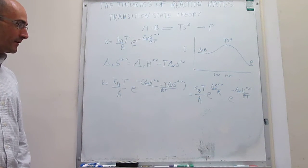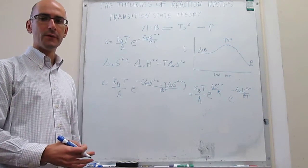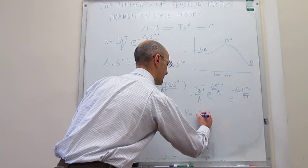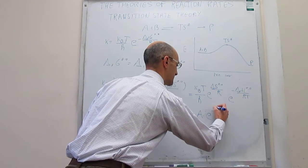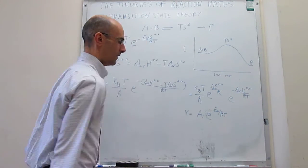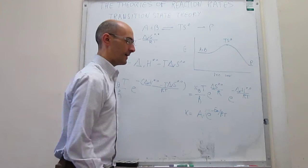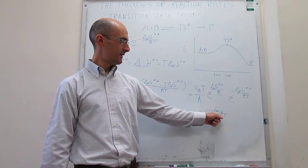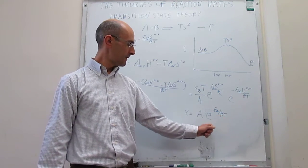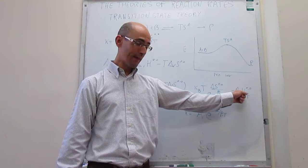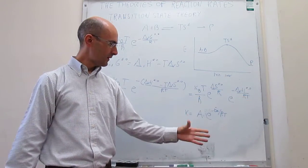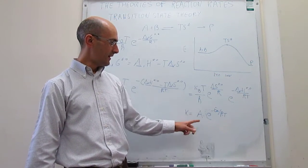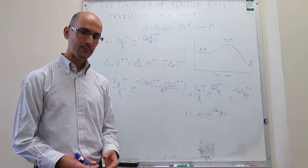We can take a pause here and compare this to the Arrhenius expression. The Arrhenius expression is k equals A times e to the minus E_A over RT. When we compare these two expressions, they look very similar: in the Arrhenius theory you have an exponential that depends on an energy divided by RT, and here you have an exponential of an enthalpy divided by RT. So this gives you a relationship between delta H and the activation energy, and the rest would be equal to the pre-exponential factor.